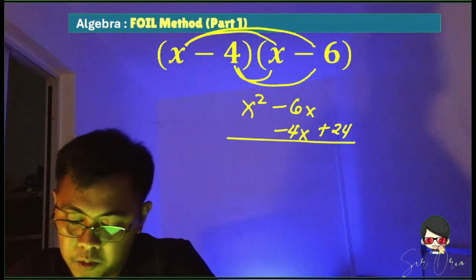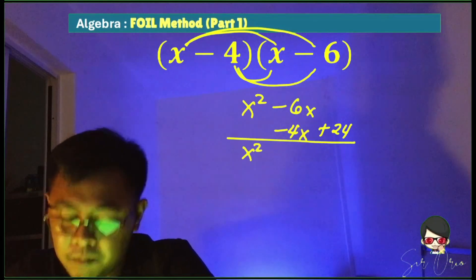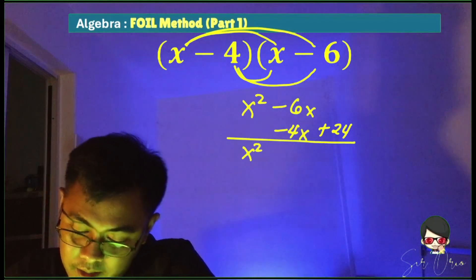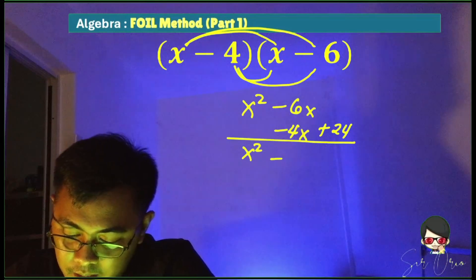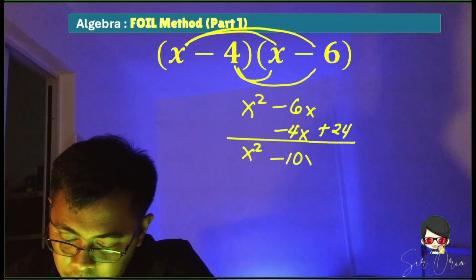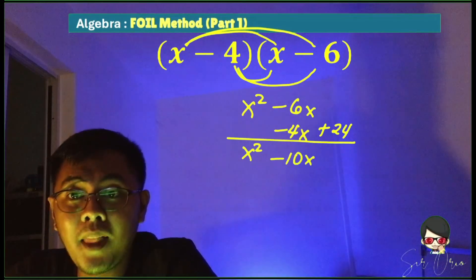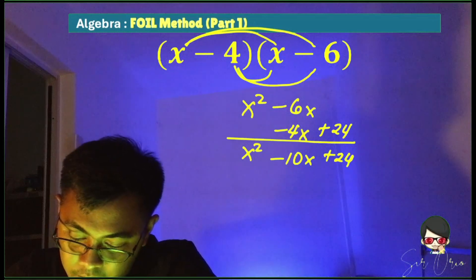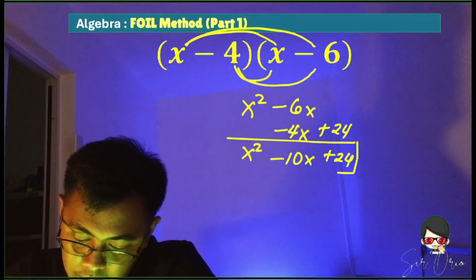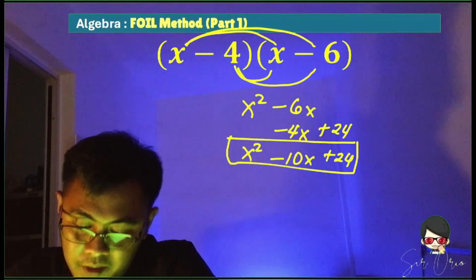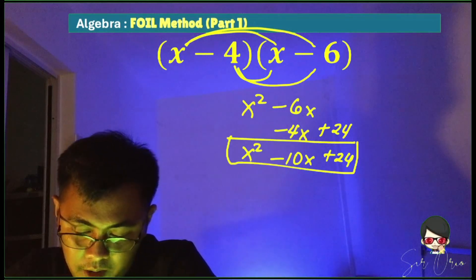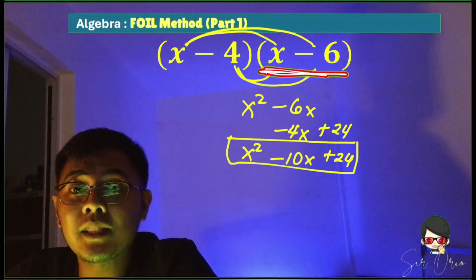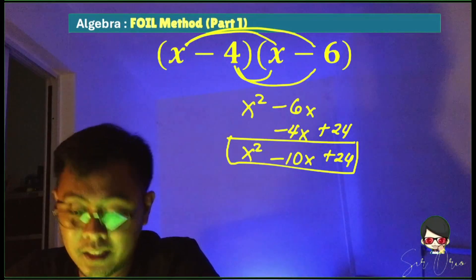So x squared, negative 6x minus 4x, that is negative 10x plus 24. And this is the product of x minus 4 times x minus 6.